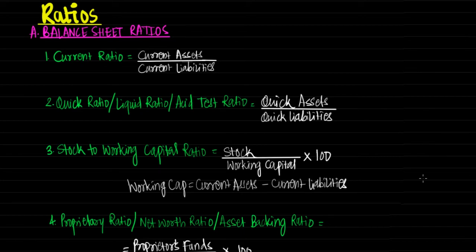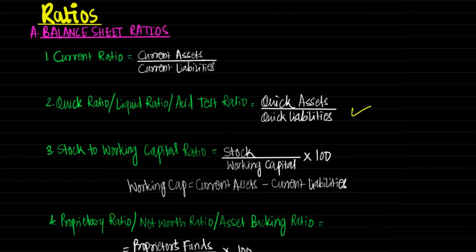Next ratio is quick ratio, also called liquid ratio or acid test ratio, calculated as quick assets upon quick liabilities. Quick assets include all current assets minus stock and prepaid expenses. Quick liabilities include all current liabilities minus advances received and bank overdraft. Its significance is that it helps to know the immediate short term liabilities and the ability of the business to pay them. Generally, 1:1 is the standard quick ratio, meaning quick assets must be at least equal to quick liabilities.